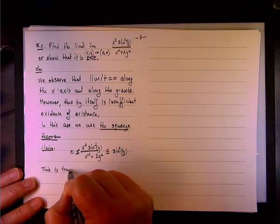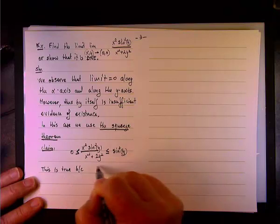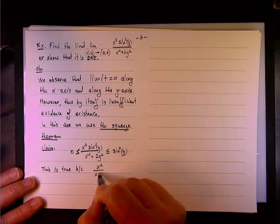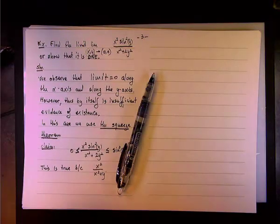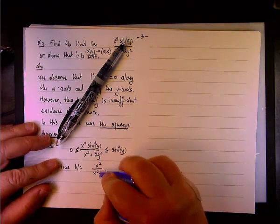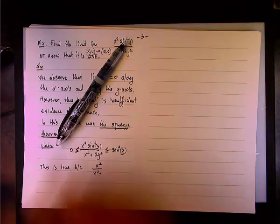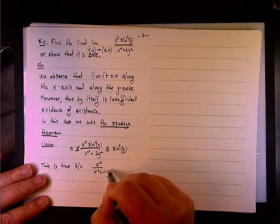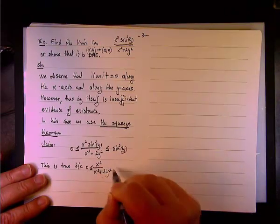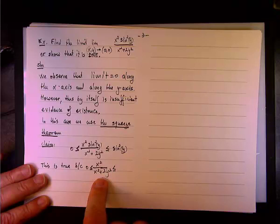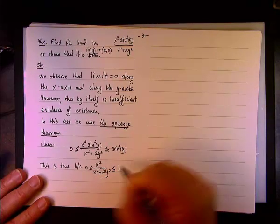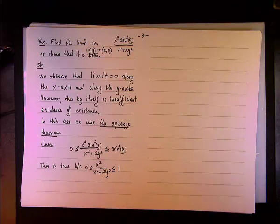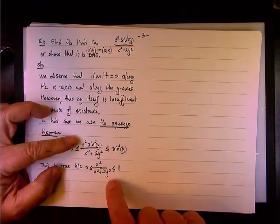Now why is this true? This is true because x squared over x squared plus 2y squared—everything is positive because we're dealing only with squared terms and there is no subtraction. So we know that it's greater than or equal to 0. But because the denominator is greater than the numerator, we know that it's less than or equal to 1.